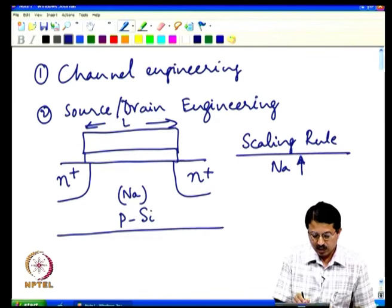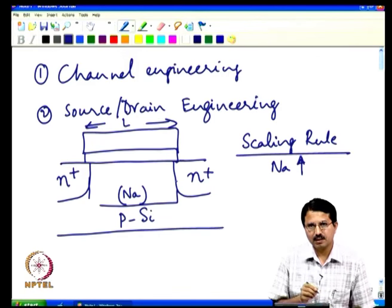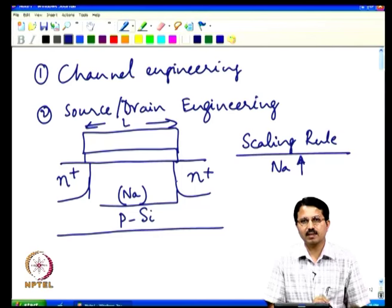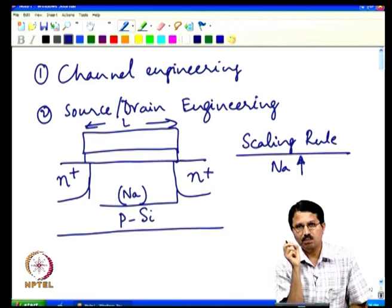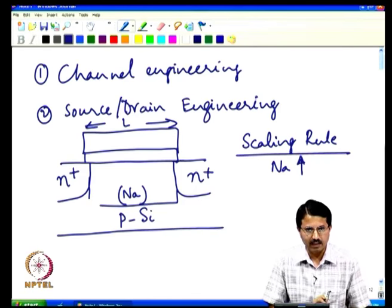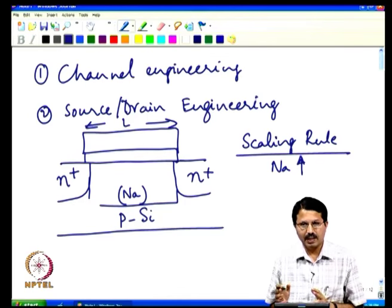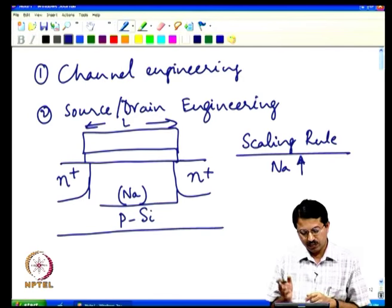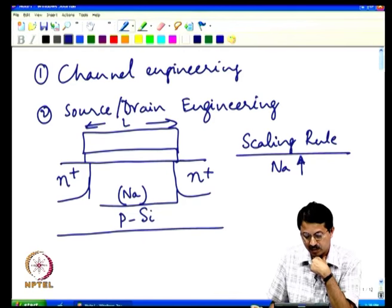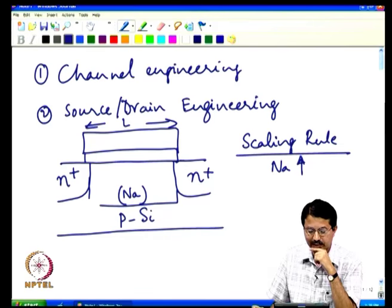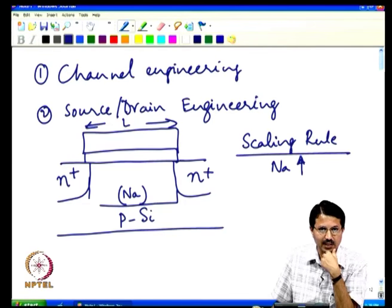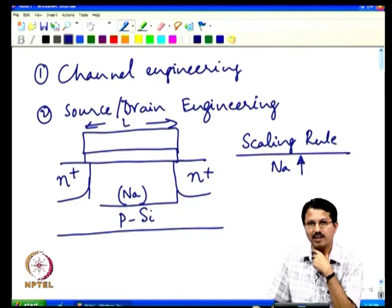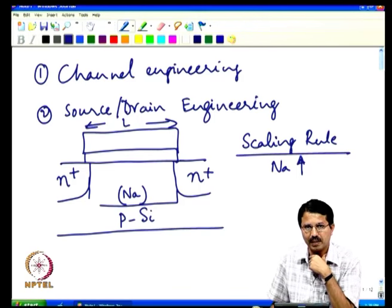The question is: should N_A increase everywhere in the region of interest? While increasing N_A is important from the point of view of short channel effects — because higher N_A reduces coupling between drain and source, limiting V_T roll-off — and also reduces drain-induced barrier lowering since the drain electric field is screened by higher doping concentration.